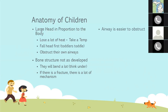Their proportionately larger head also comes with a proportionately larger tongue, which means they can actually obstruct their own airway. We'll see in our video later what kids tend to do when they have a tongue situation. Their trachea is flexible — where adults have cartilaginous structure you can feel, with a kid it's much more like a bendy straw. That, combined with the large head situation, makes it very easy for them to kink off their airway.